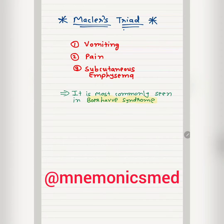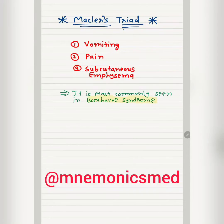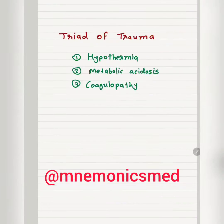Now we will learn about Mackler's Triad. Vomiting, pain, and subcutaneous emphysema are seen in Mackler's Triad. It is most commonly seen in Boerhaave syndrome. You have to remember these three things: vomiting, pain, and subcutaneous emphysema.